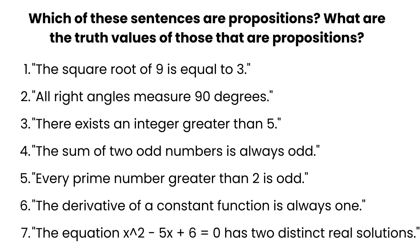The declarative sentence, the proposition. If you buy: number one — true, number two — true, number three — true, number four — false. Three plus five is eight, so it cannot be an odd number. So number four is false.